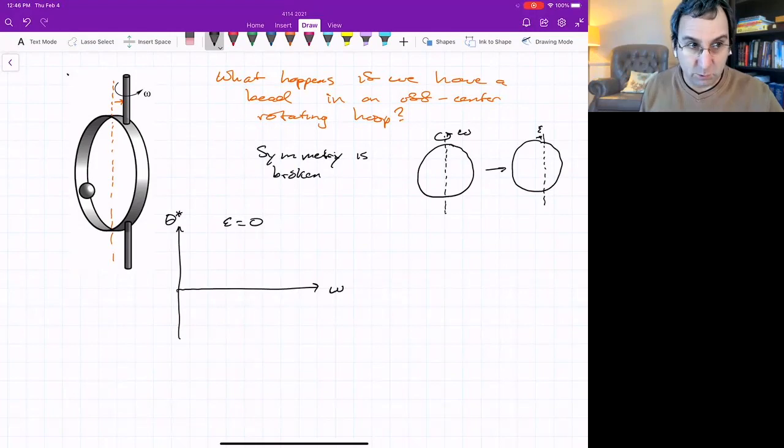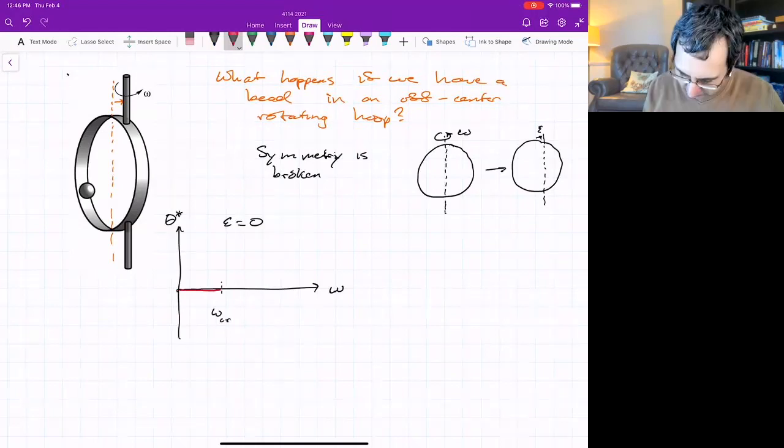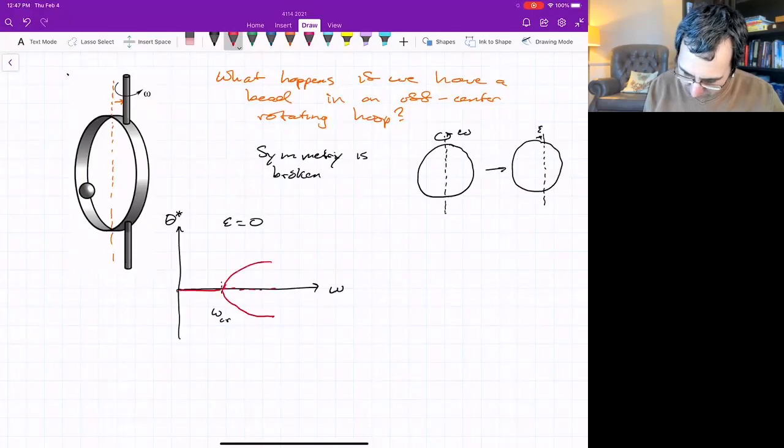We had before that it was stable until we reached omega critical, some critical value, and then that became unstable and there were two branches of stable points coming out in a pitchfork bifurcation.